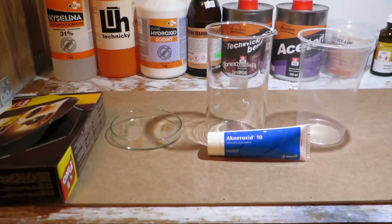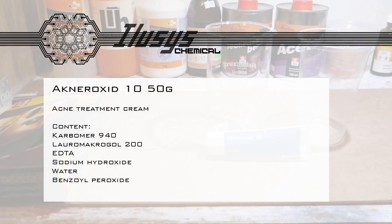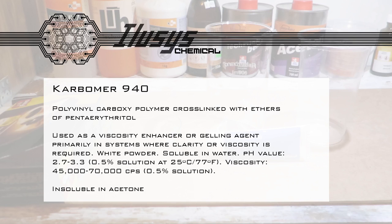In this video we will isolate benzoyl peroxide from acne treatment Aneorxid tint cream. The product contains carbomer 940, which is a polyvinyl polymer insoluble in acetone and in basic solutions.